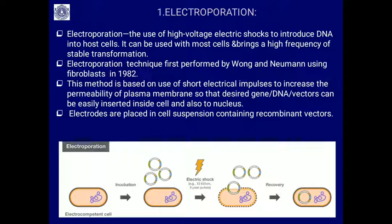Today I will restrict myself to electroporation. Electroporation is the use of high voltage or electric shock to introduce DNA into host cells. It can be used with most cells and brings a high frequency of stable transformation. When the cells are given a sudden electric shock, small holes form on the plasma membrane or lipoprotein membrane, and through those holes the gene of interest or the vector carrying our gene of interest can get into the cell. This is what is called electroporation.